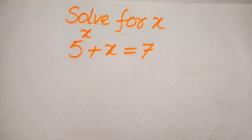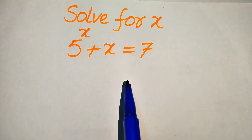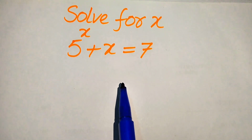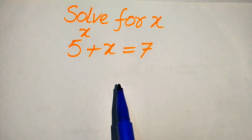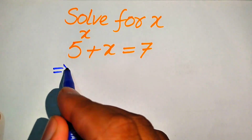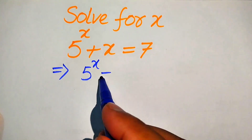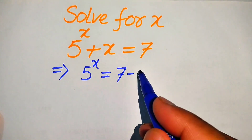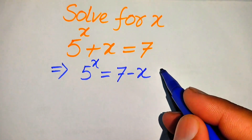Hello everyone. How to solve this problem for the values of x: if we have 5 to the power of x plus x is equals to 7, and we solve this problem for the values of x. The very first thing we are going to do is move this x to the right hand side, and it will become 5 to the power of x is equals to 7 minus x.